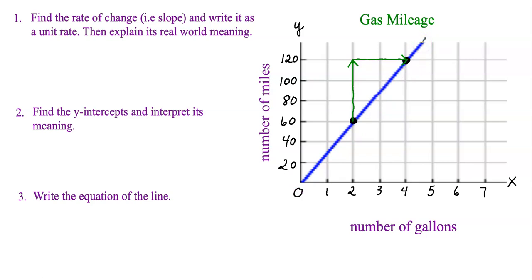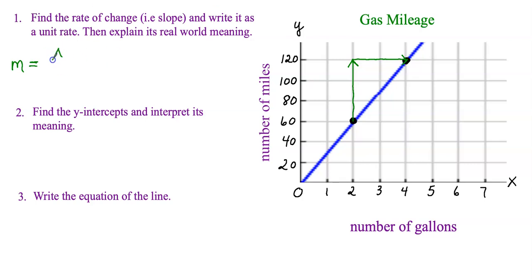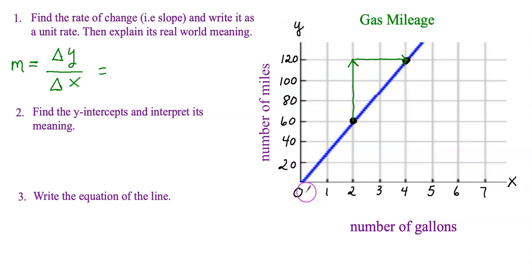Slope, or rate of change, is represented by the letter M, and it's defined as the change of Y divided by the change in X. The change of Y is the vertical length of the triangle, and the change of X is the horizontal length. Remember: X goes left-right, and Y goes up-down.